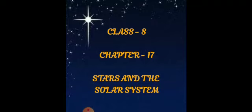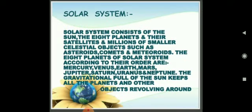Now in this video part, firstly we will talk about the solar system. The solar system consists of the sun, the eight planets and their satellites, and millions of smaller celestial objects such as asteroids, comets, and meteoroids.